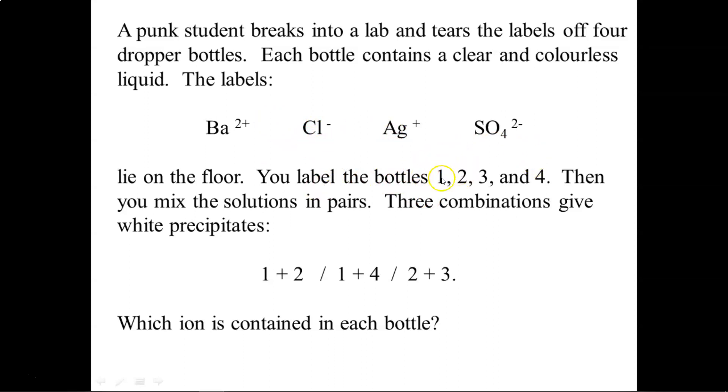Now I don't know which one is number 1. I just label them randomly 1, 2, 3, 4. I then mix the solutions in pairs, and only three of these solution combinations gives me a white precipitate, a solid. So mixing bottles 1 and 2, bottles 1 and 4, and bottles 2 and 3 created these white precipitates. So the question is, which ion belongs to which bottle?